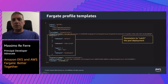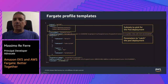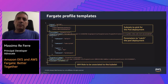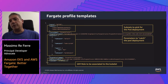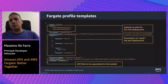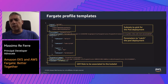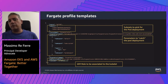In addition to pod selectors, Fargate profiles provide information like which subnet to connect this pod to, and the personality of the kubelet. Because the kubelet needs to have an AWS IAM role associated to it — for example, to be able to pull images from ECR.